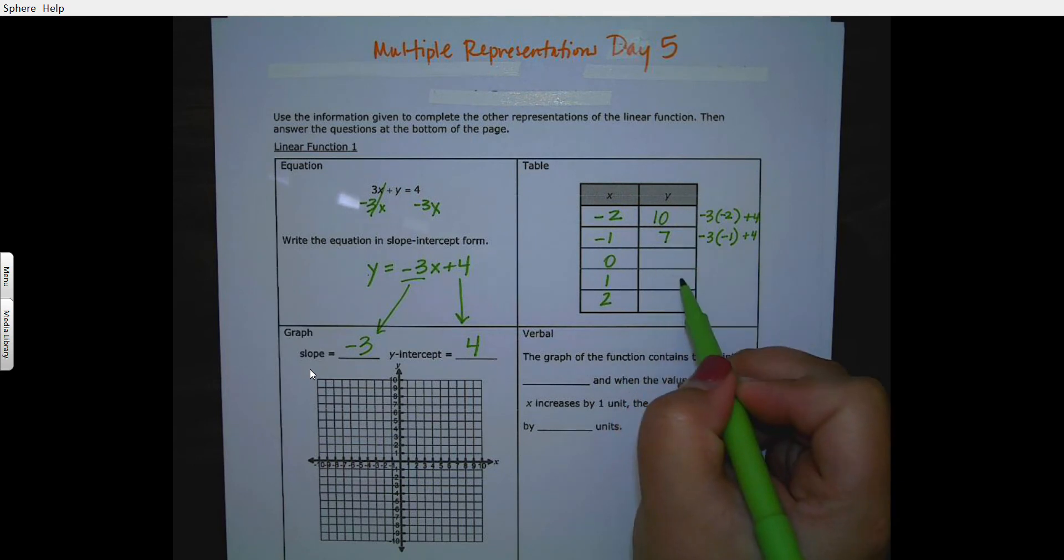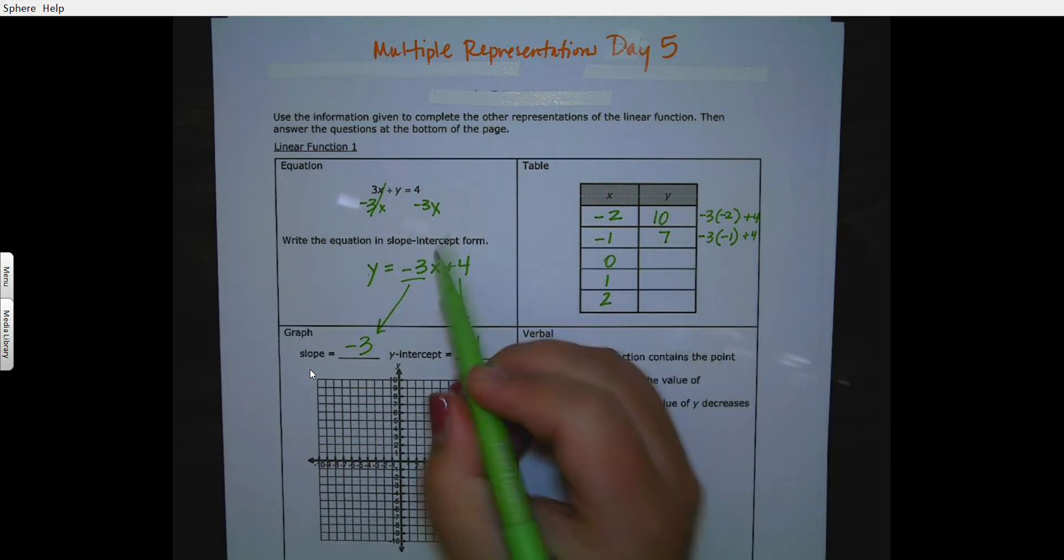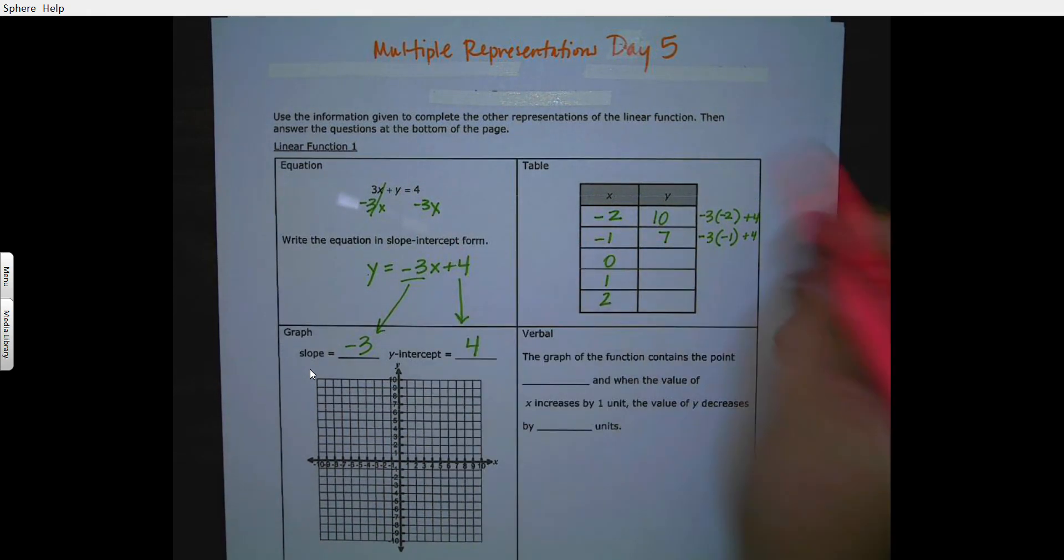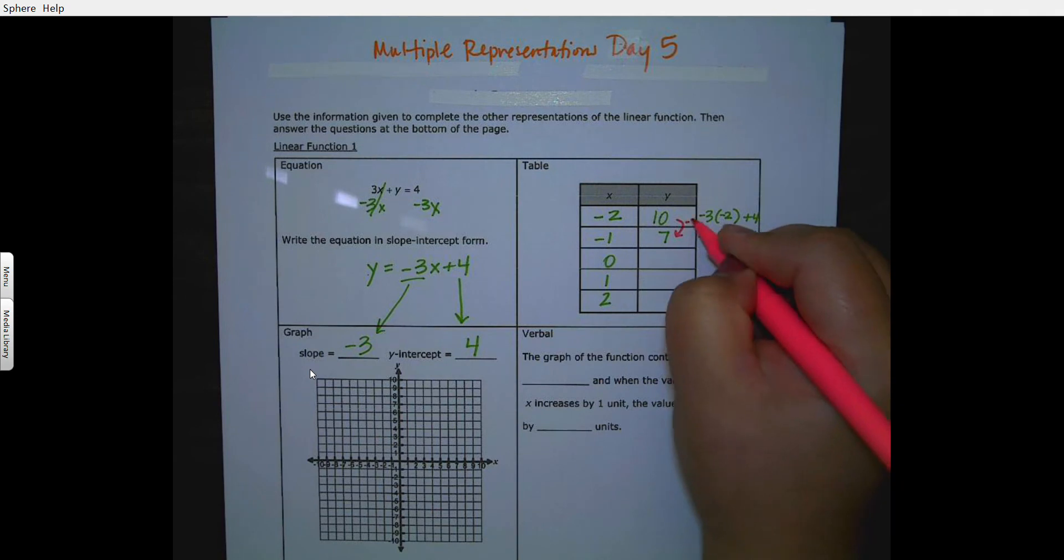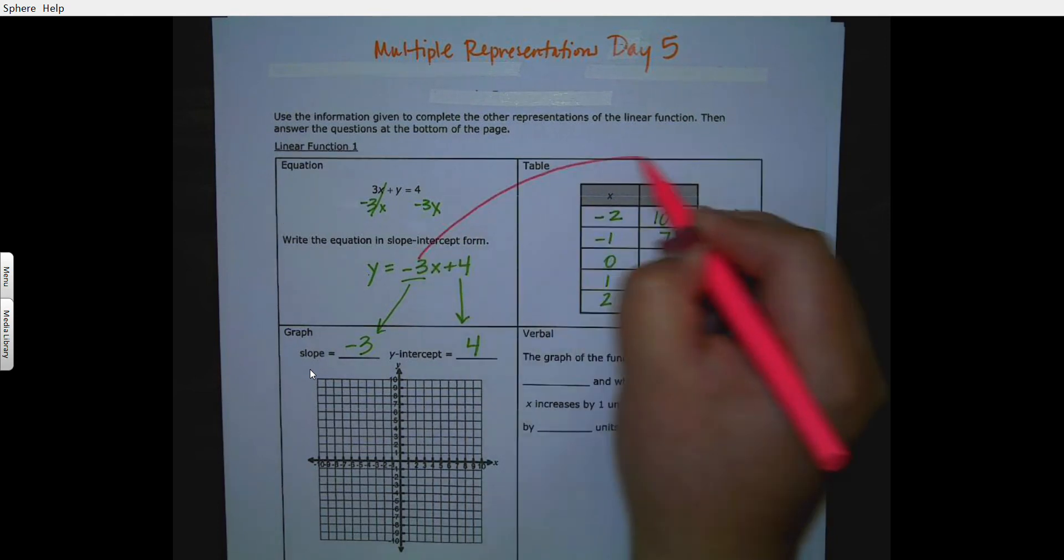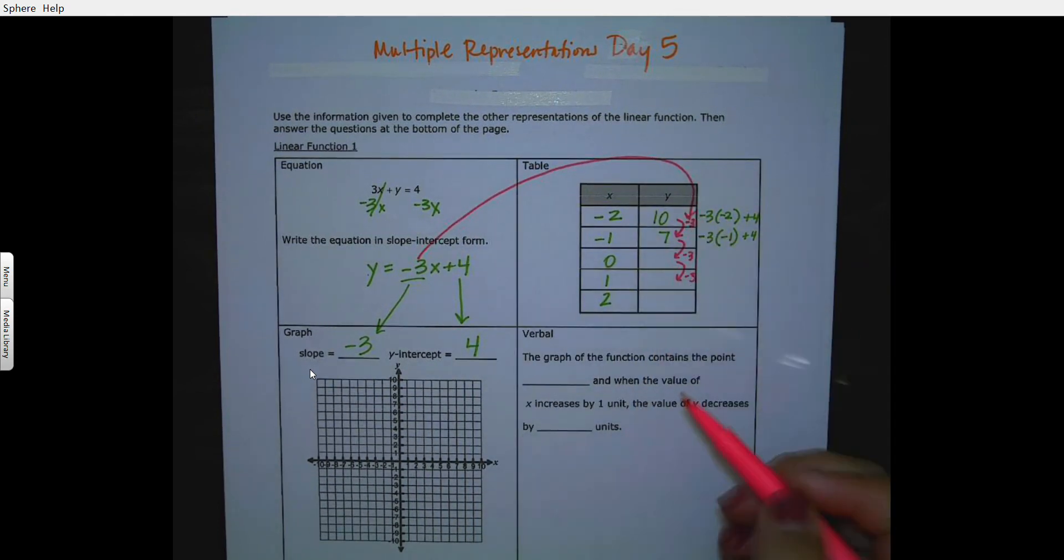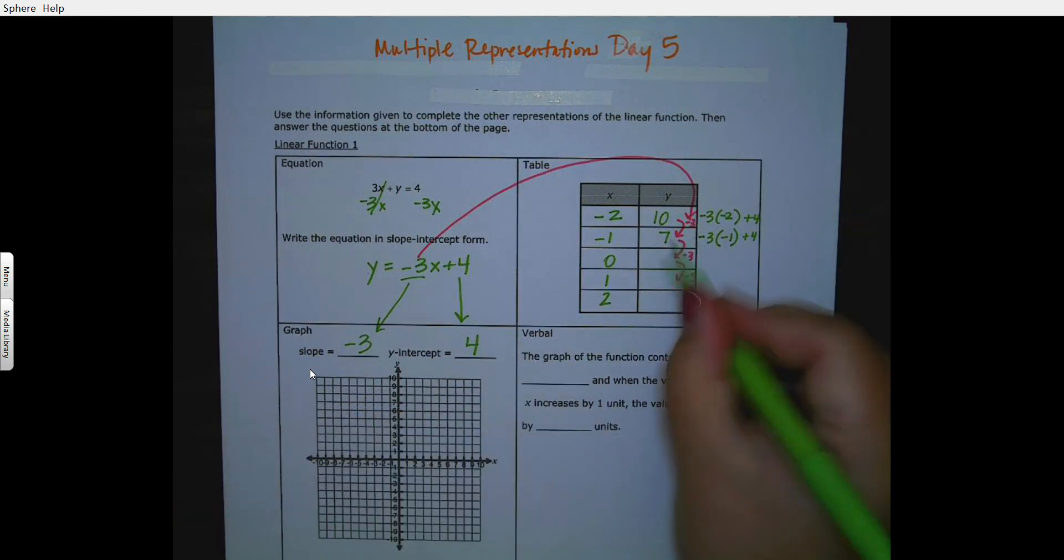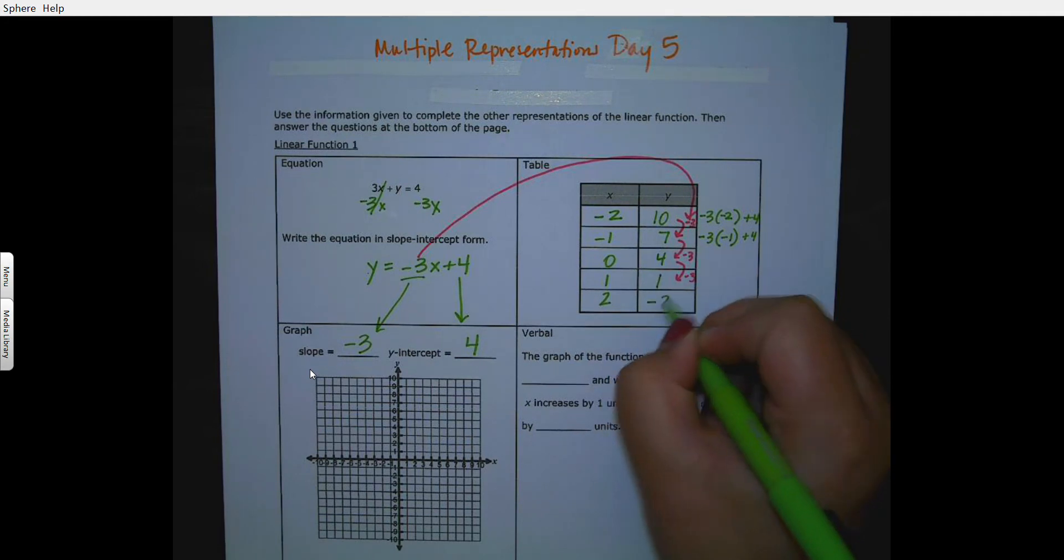Okay, now I could keep going through this or I could just use my slope. My slope is negative 3, that means I go minus 3, minus 3, minus 3. This number here is this number here. So 7 minus 3 would give me 4, 4 minus 3 would give me 1, 1 minus 3 would give me negative 2.